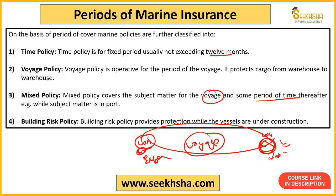Then there is the building risk policy. The building risk policy basically covers ships that are under construction. This provides protection during the construction period — if there is a loss during construction, the insurance policy covers it. That is your building risk policy. So remember: time policy, voyage policy, mixed policy, building risk policy. You need a basic idea of what each one is. Once understood, that's enough.